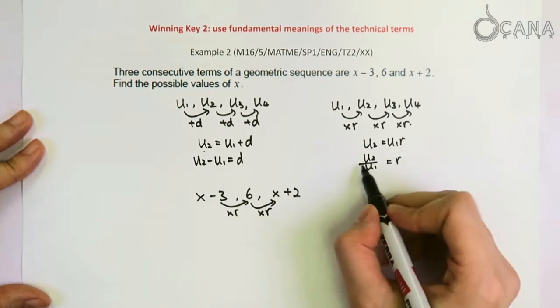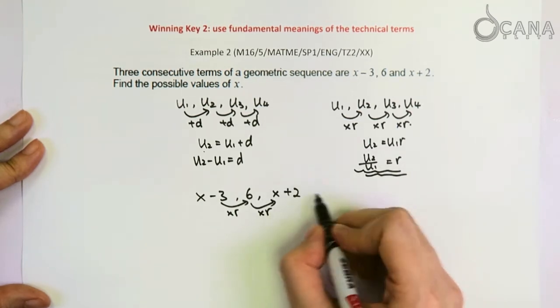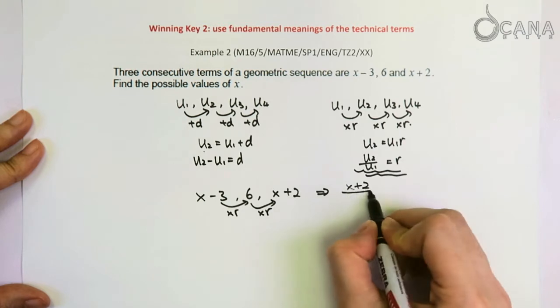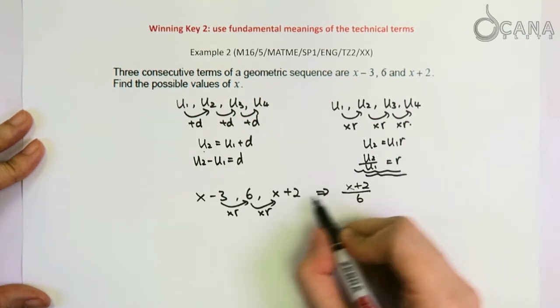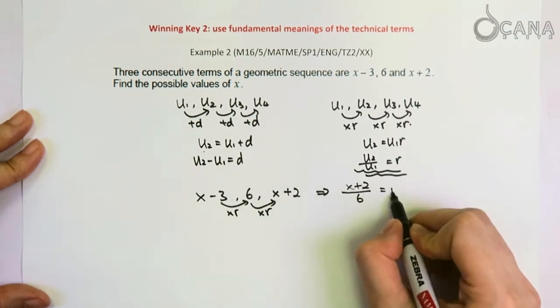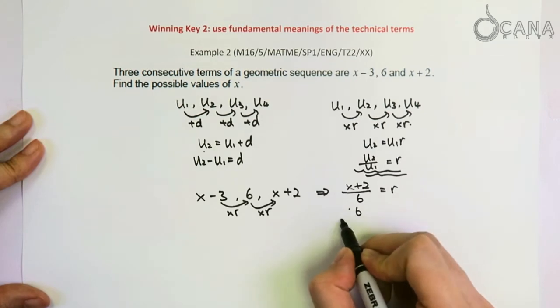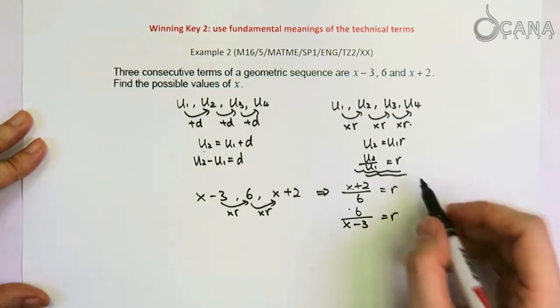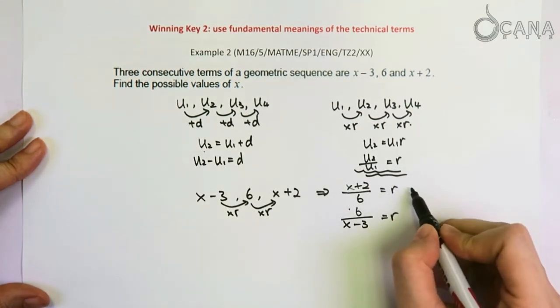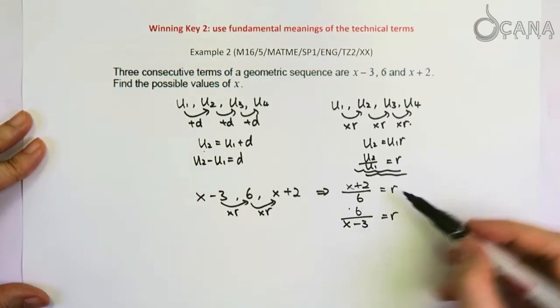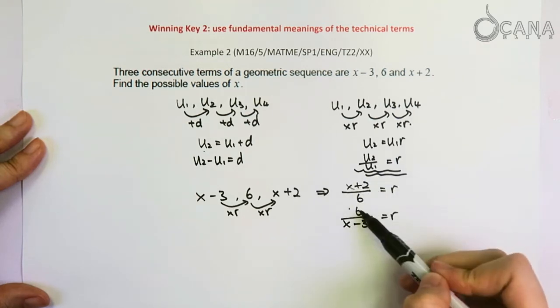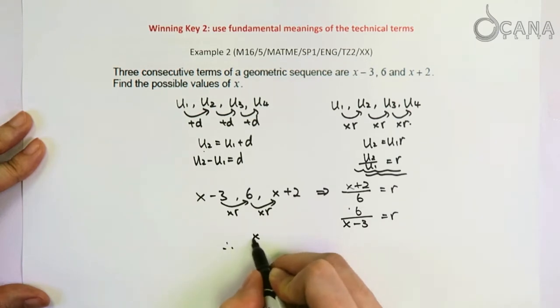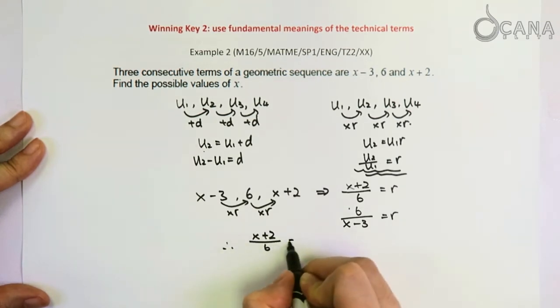And from what we've just talked about, we know that the same relationship can be expressed in a quotient form. So this term divided by this term gives you the common ratio, and also this will give you the common ratio. So combining these two equations together, you see that both of these fractions are equal to the common ratio. That means that these fractions are equal to each other.